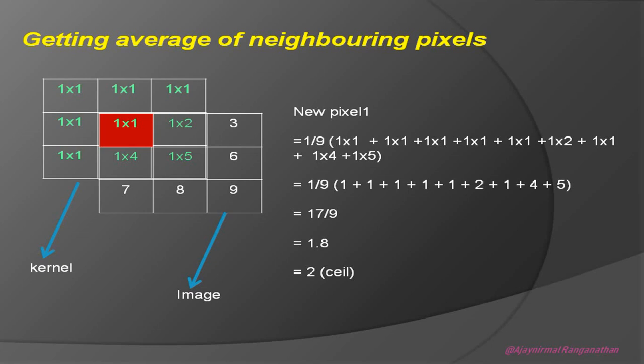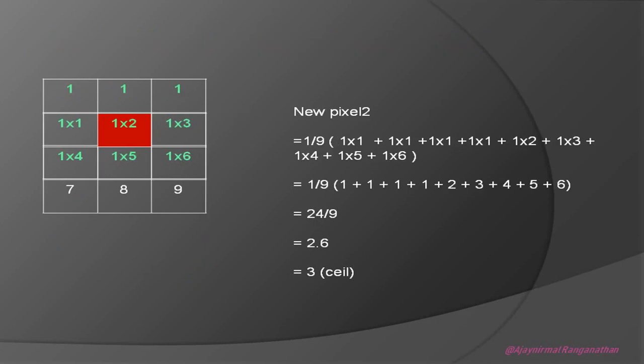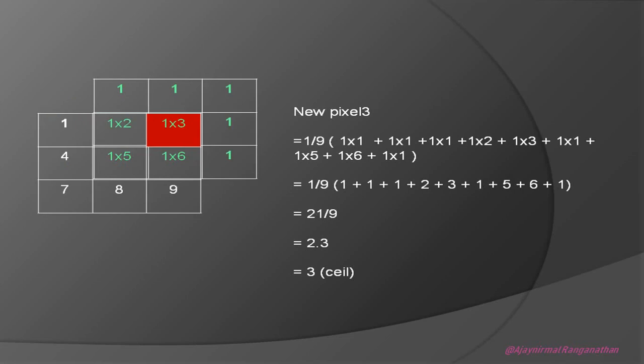17 divided by 9 gives 1.8, and ceiling this value gives 2 — that's new pixel 1. Then the window slides horizontally — that's why it's called a sliding window — and the mean operation is performed on the second pixel, giving 2.6, which ceilings to 3. Moving to the third pixel, we get 2.3, which ceilings to 2. This operation must be performed for every pixel in the image.